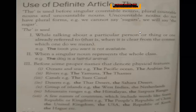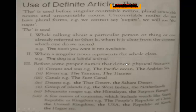When you want to particularize a noun, you use THE. Example: 'The book you want is not available' — the speaker as well as the listener both know this particular thing. THE is also used when a singular noun represents the whole class or species. For example: 'The dog is a faithful animal' — here the singular 'dog' refers to the complete class.